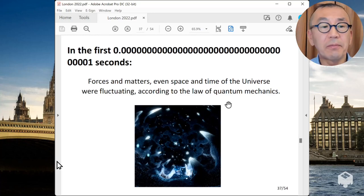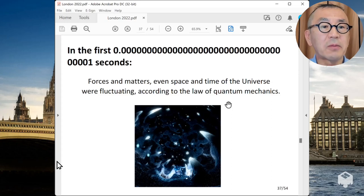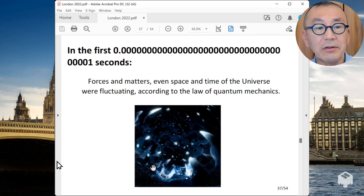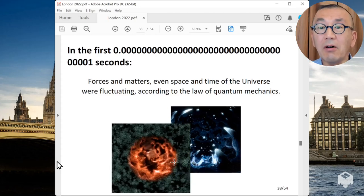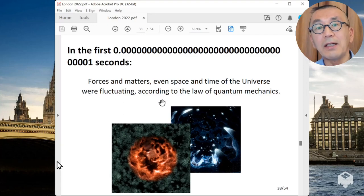And during this inflation period, it is expected that force and matters, even space and time of the universe, are fluctuating according to the law of quantum mechanics. In the movie, we try to explain some of the features of quantum mechanics using this kind of images. And if you combine general relativity and quantum mechanics and apply that to the inflation period, then we can make predictions.